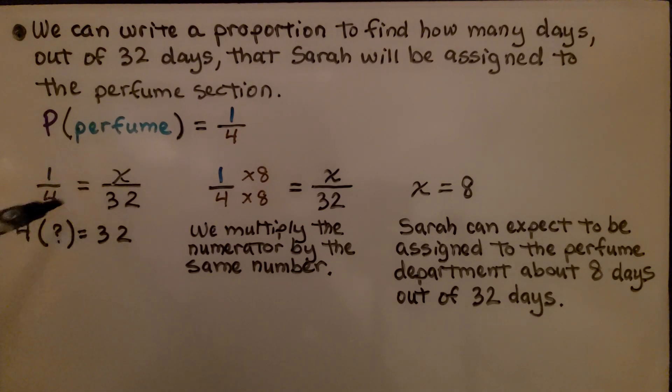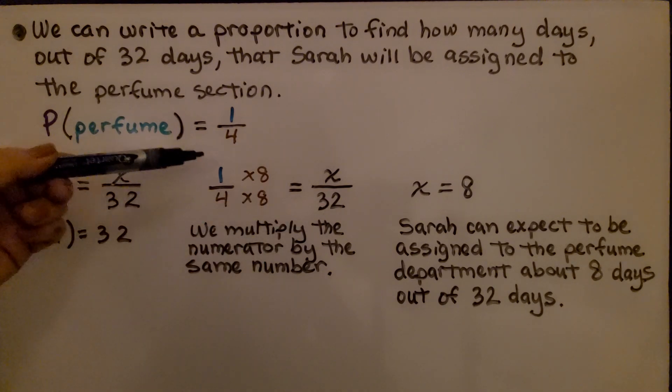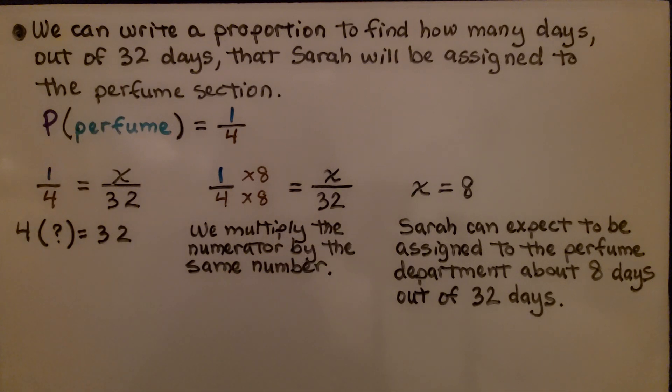We think 4 times some number is 32. Well, that would be 4 times 8. We multiply the numerator by the same number. We know x is equal to 8. Sarah can expect to be assigned to the perfume department about 8 days out of 32 days.